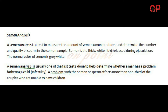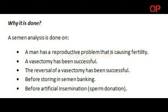A problem with the semen or sperm affects more than one-third of the couples who are unable to have children. Why it is done: A semen analysis is done when a man has a reproductive problem that is causing infertility, a vasectomy has been successful, the reversal of a vasectomy has been successful, before storing in semen banking, or before artificial insemination or sperm donation.